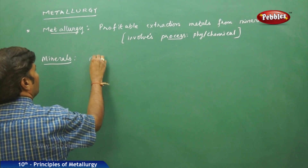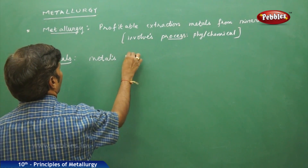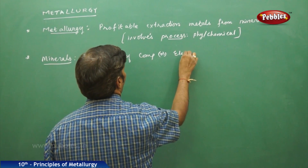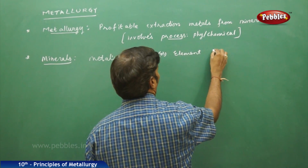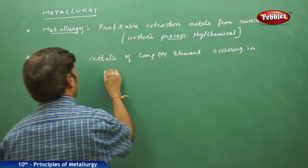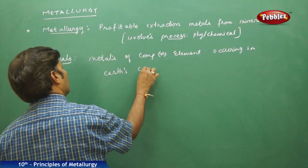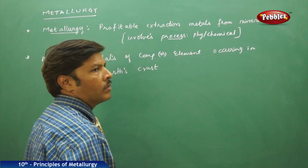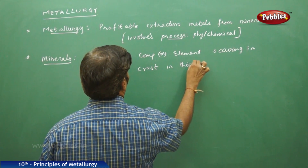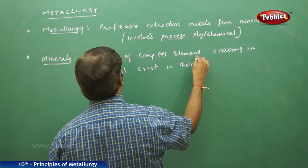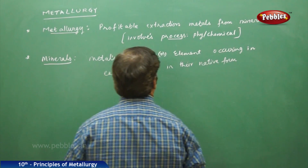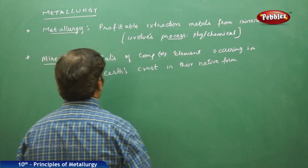If we take minerals, metals or a compound or element occurring in earth's crust in their native form can be called a mineral. The 'native form' is an optional term we use here.